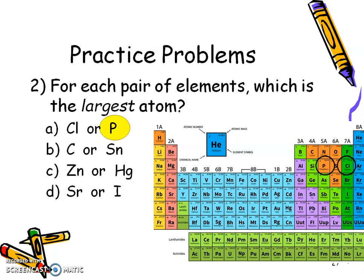So again, pause the video and see if you can do B, C, and D. So for B, you should have found those two elements and circled tin because they're in the same group. And as you go down, you get larger. And for letter C, you should have picked mercury. And for letter D, you should have picked strontium because again, as you go across the period, it gets smaller and I'm looking for the larger guy. So hopefully that makes sense. And we should have more practice with our book work in class.